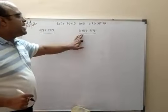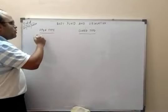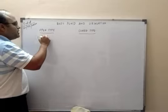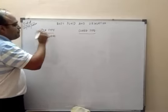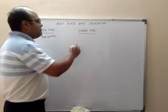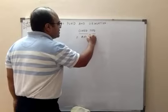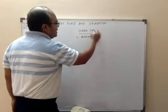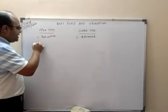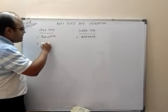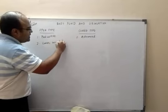As you can see, there is an open type and a closed type of circulatory system. The open type of circulatory system is the primitive one, while the closed circulatory system is the advanced feature. The open type of circulatory system is found in the lower invertebrates.